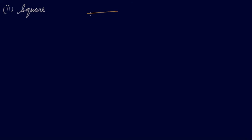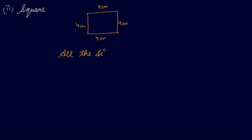The next quadrilateral is the square. In a square, all the sides are equal — for example, 4 cm, 4 cm, 4 cm, and 4 cm. All four sides are equal.